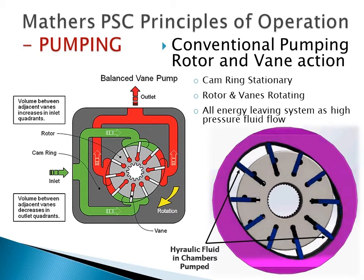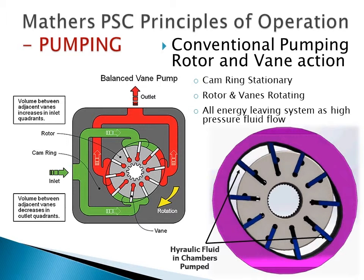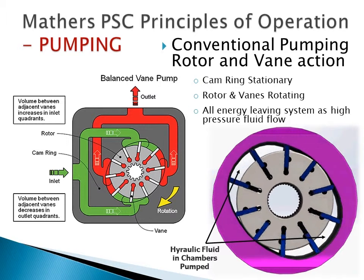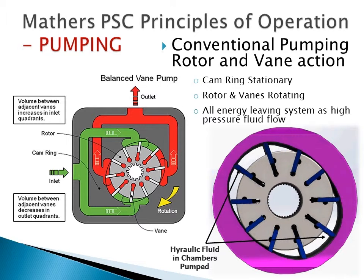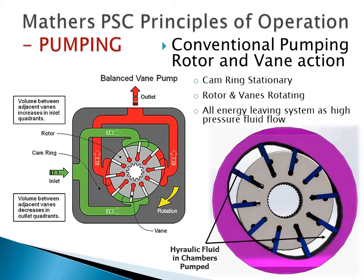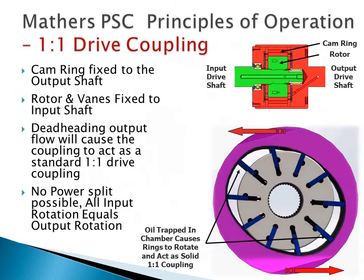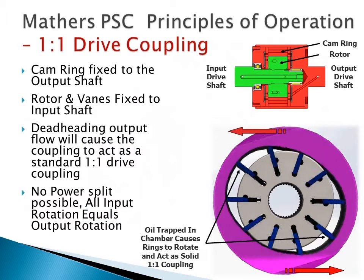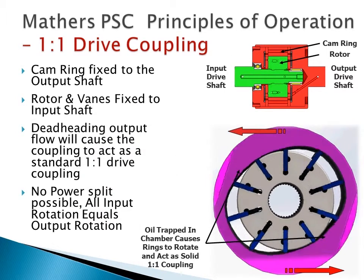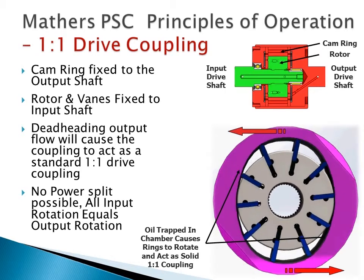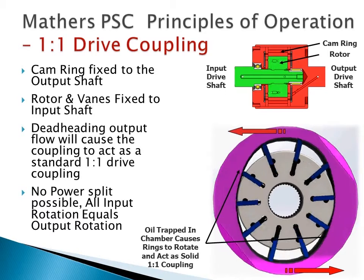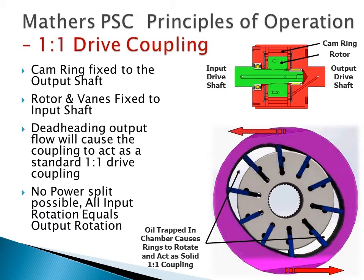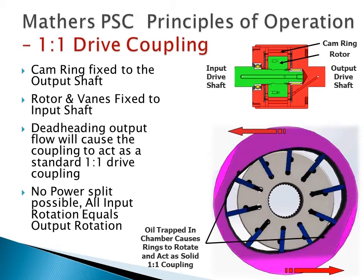The next few slides demonstrate the internal function of the power split coupling. The Mathers PSC can behave as a standard main pump if required — achieved by locking the outer cam ring in place and allowing the rotor to pump hydraulic fluid, converting all input shaft power to high pressure hydraulic fluid flow. Alternatively, by preventing any oil flow, we can lock the coupling into a 1-to-1 through drive coupling. This is achieved by first fixing the cam ring to the output shaft, then deadheading the output pumping oil and allowing the cam ring and output shaft to rotate freely.